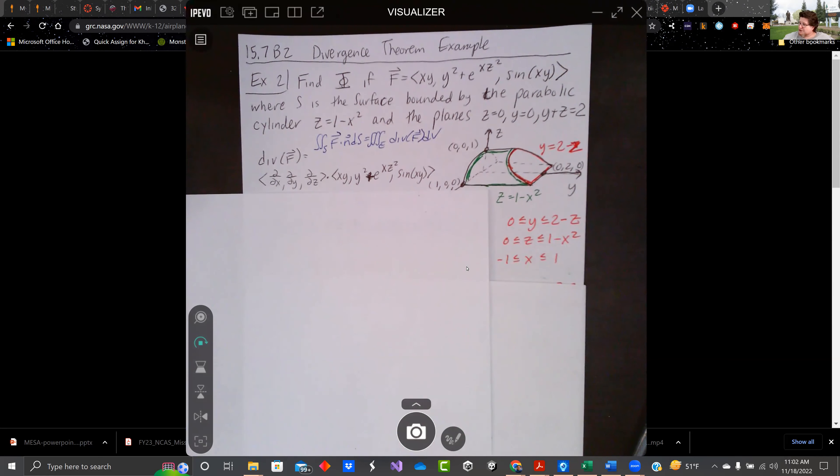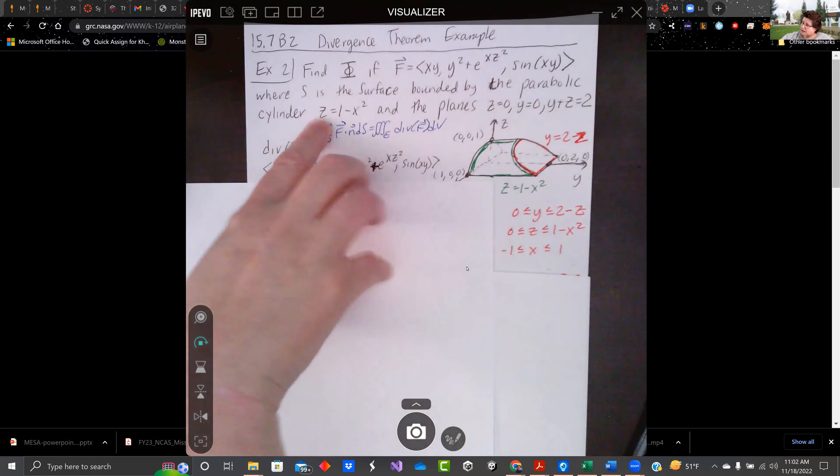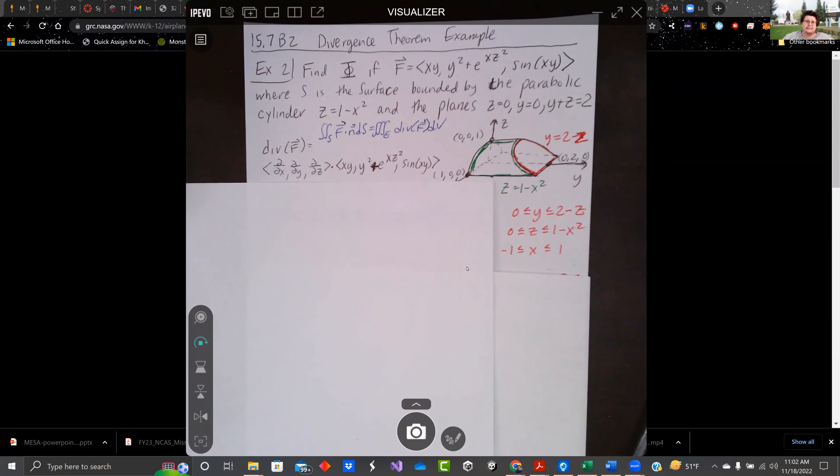If I write my boundary conditions, 0 on the left side is going up to y is 2 minus z. Then we could go along z: z is going from 0 on the bottom up to 1 minus x squared on top. And finally, it was the cylinder z equals 1 minus x squared. So when z equals 0, we see that we get negative 1 and positive 1 for our boundaries of x.